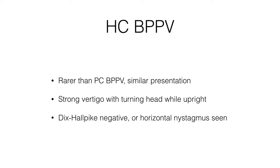You should suspect horizontal canal BPPV when you have a patient that sounds like they have BPPV clinically, but when you perform the Dix-Hallpike test, you don't see the characteristic vertical, upward, and rotatory nystagmus that is seen with posterior canal BPPV. Instead, the Dix-Hallpike test may be negative on both sides, or you may see purely horizontal nystagmus when testing one or both sides.